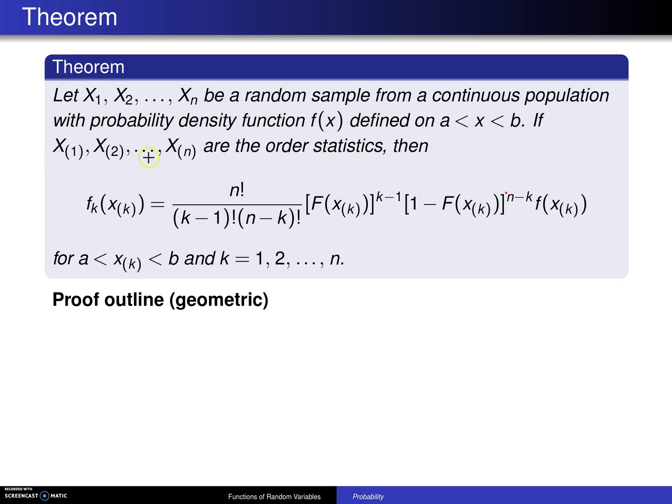If x1, x2, up to xn are the order statistics, then the marginal distribution of the kth order statistic is n factorial divided by k minus 1 factorial n minus k factorial.